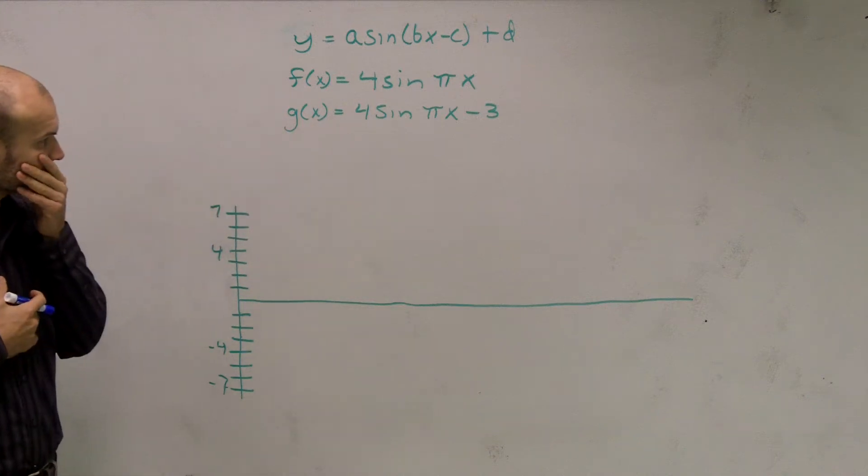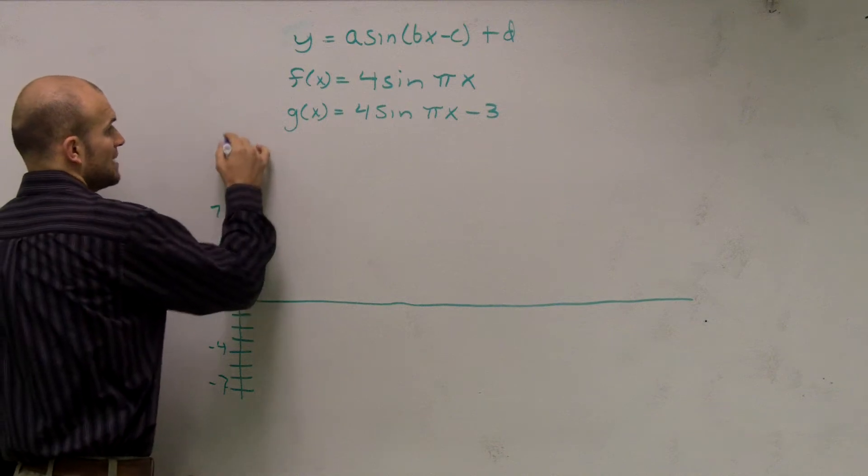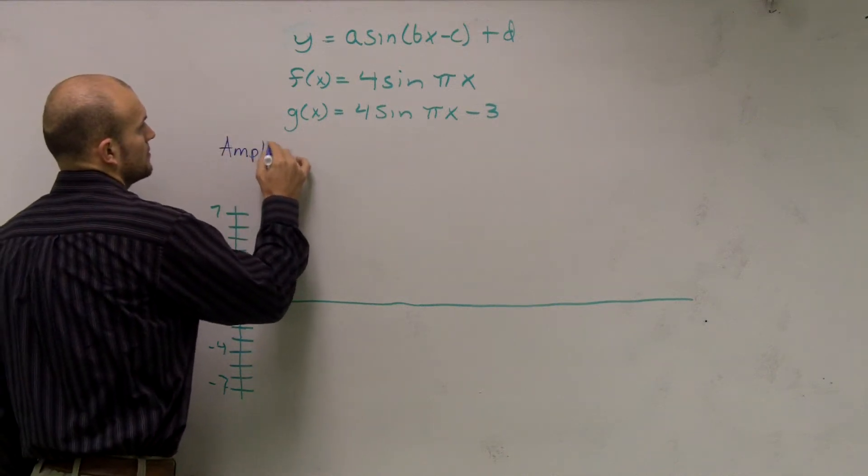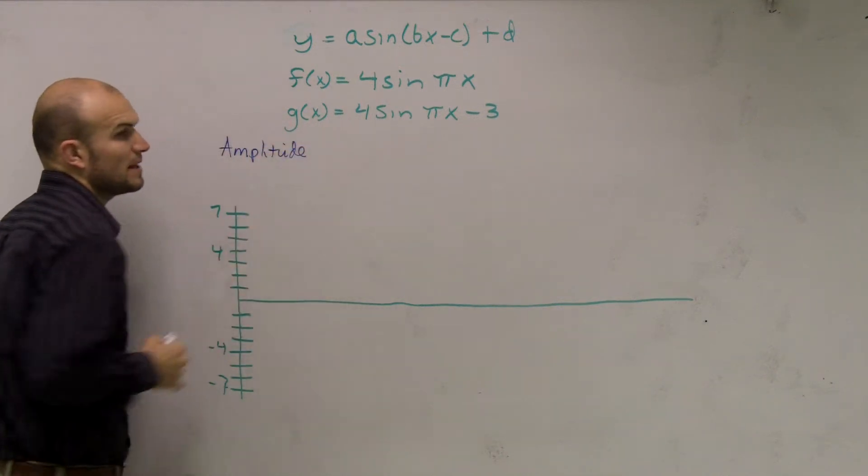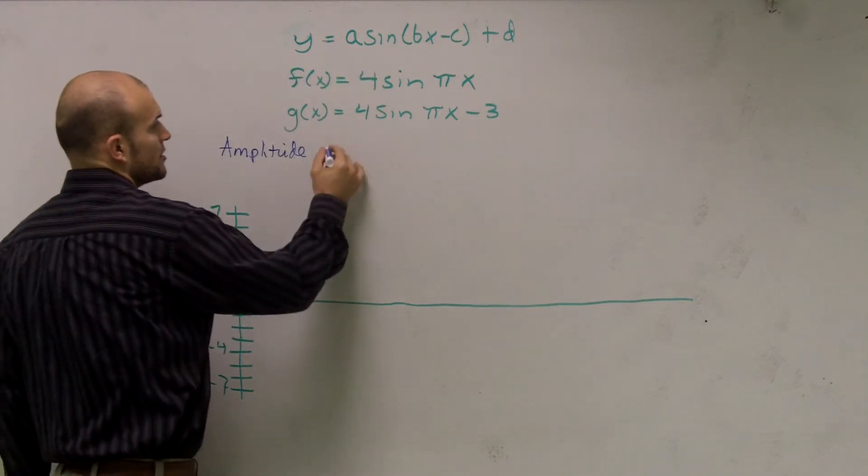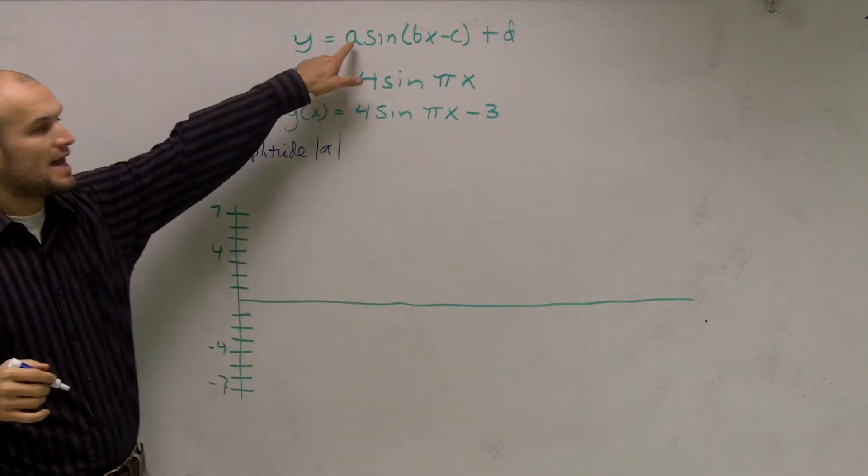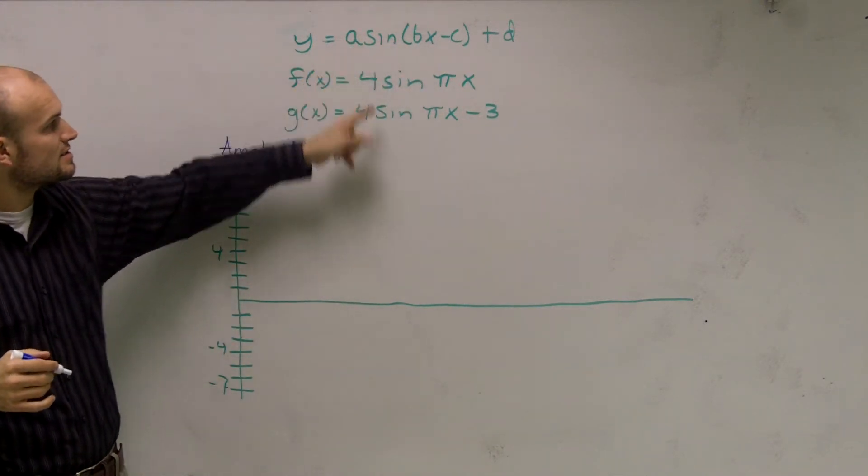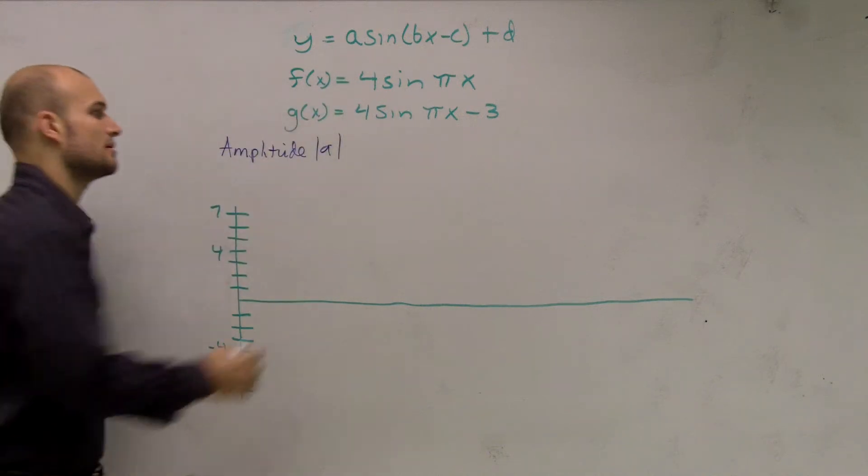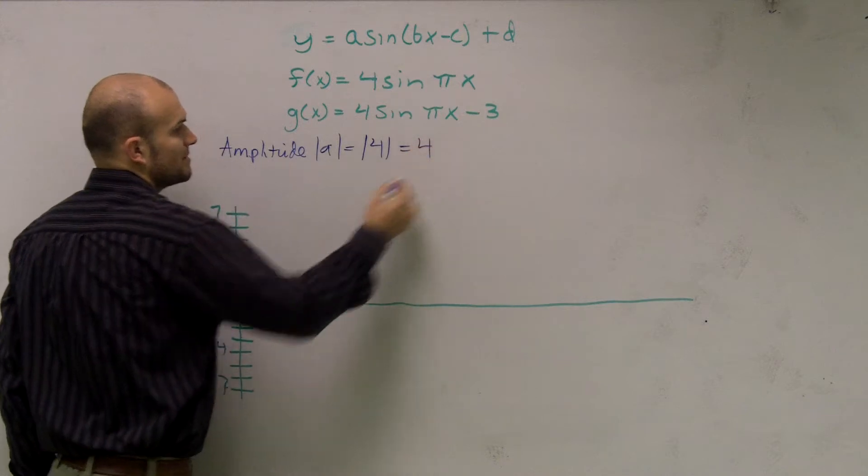When looking at this, remember there's a couple points that we need to make sure we figure out. First thing is finding the amplitude. If you remember, the amplitude is when we take our a and find the absolute value. So a is the number that's in front of your function. So I look at this and I say, well, four is my number. Four is my a. So I take the absolute value of four, which is going to give me four.